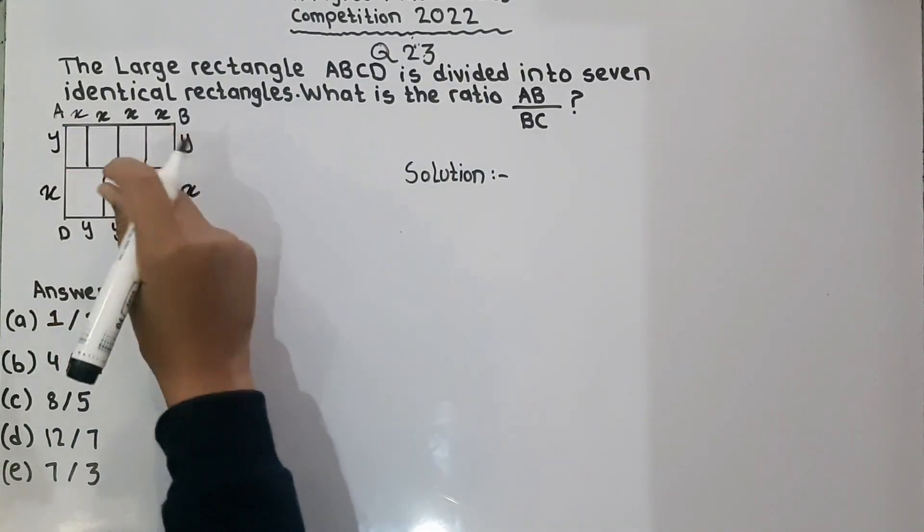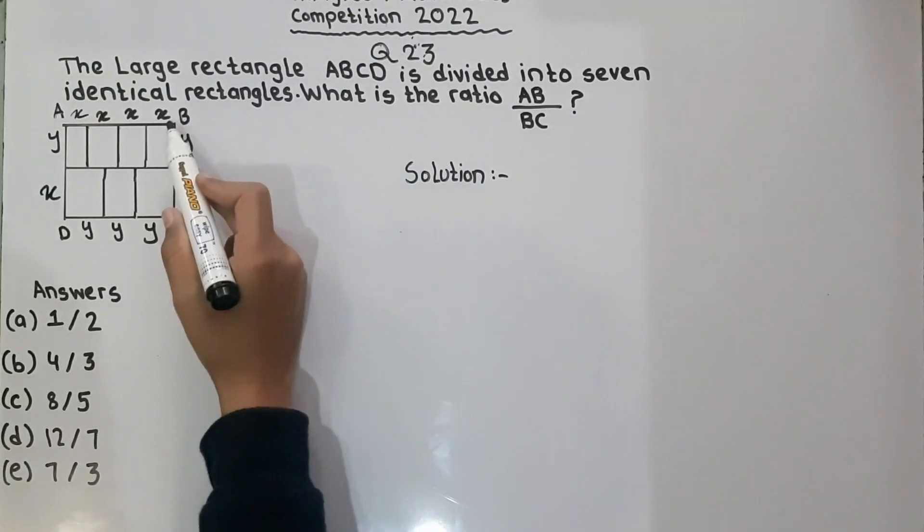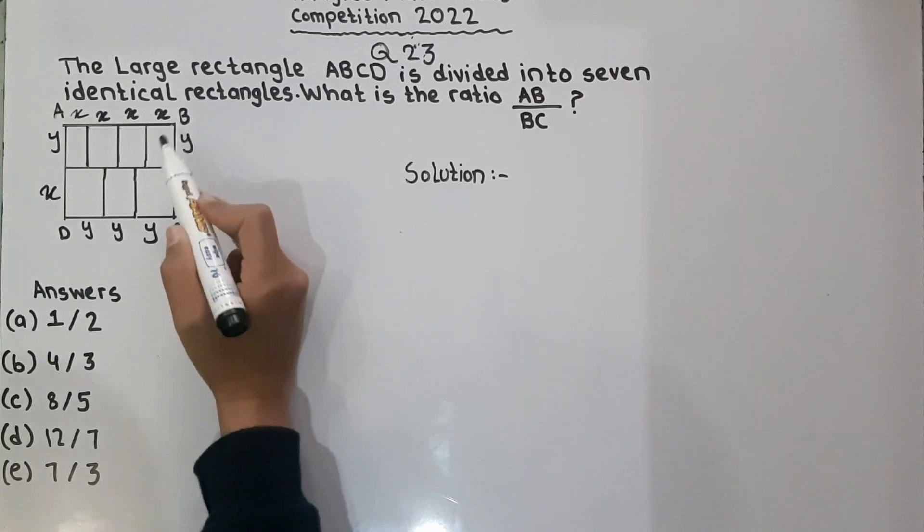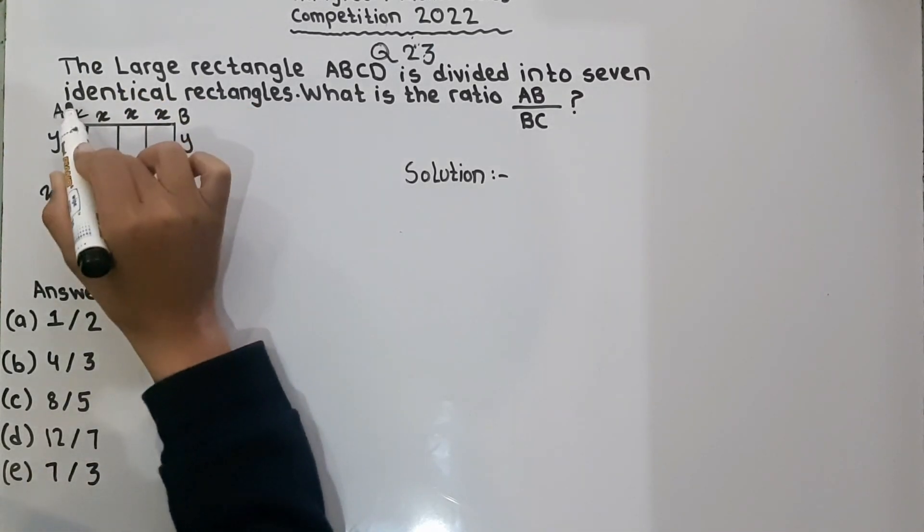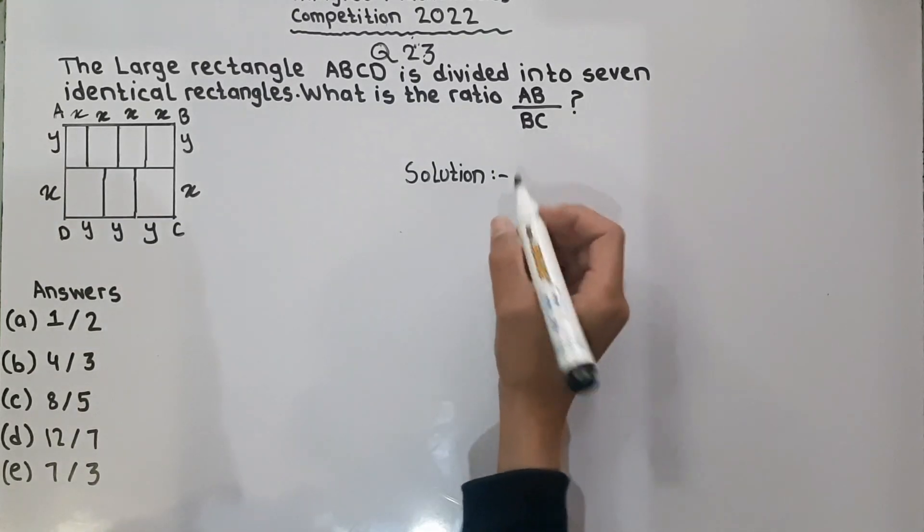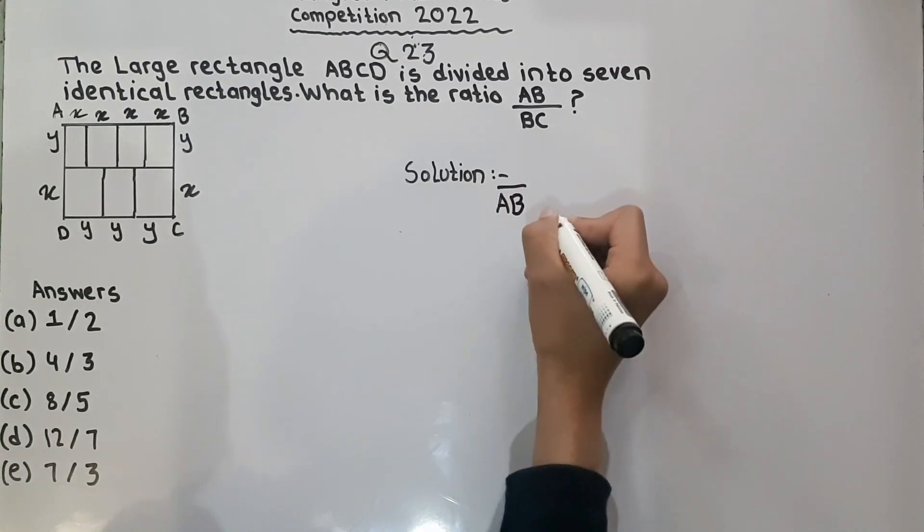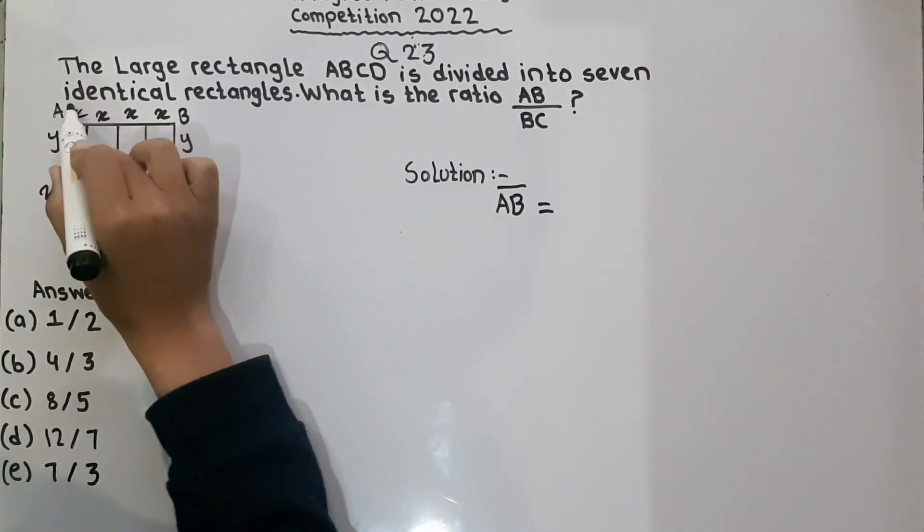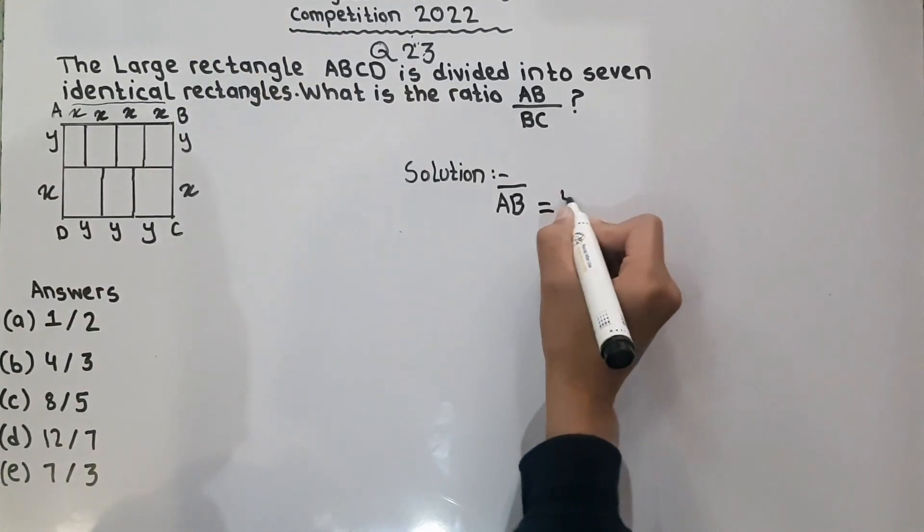The X represents the upper line of the rectangle of one rectangle. And the Y represents this line of the rectangle. This means, now we have to find AB divided by BC. So first we have to find AB. AB is equal to this. This means 4X.